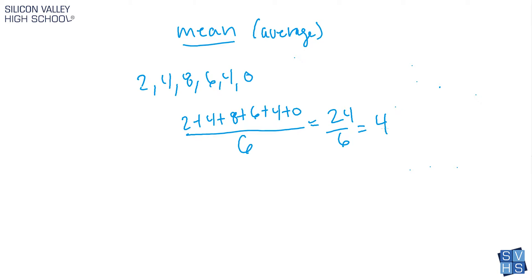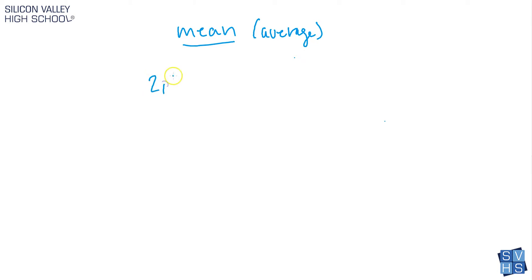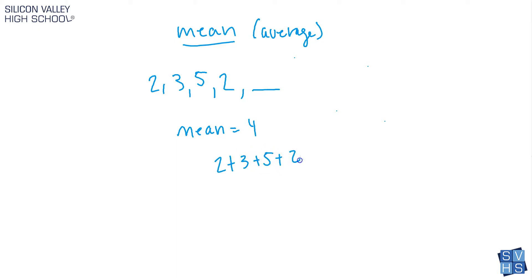There's one trick question teachers like to ask — they'll say if a student gets the following test scores, what would the last score have to be to get an average of ninety or some target. For example: you have the values two, three, five, two, and one unknown value, and they tell you the mean equals four. You set it up as two plus three plus five plus two plus x, divided by — be careful — five, not four, because there are five values including the unknown.